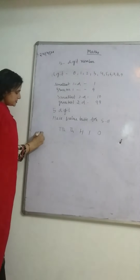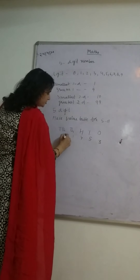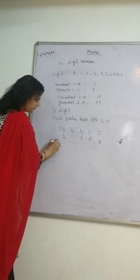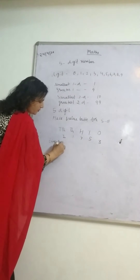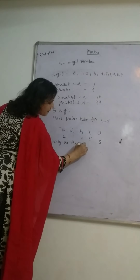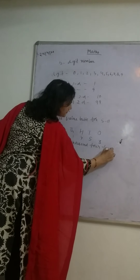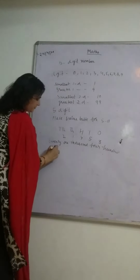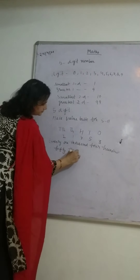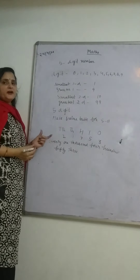Suppose we take any number — this 5-digit number is 3, 5, 4, 1, 2. So we will read this number as 21,453. So 21,453 is our 5-digit number.